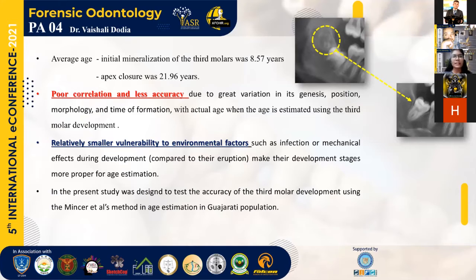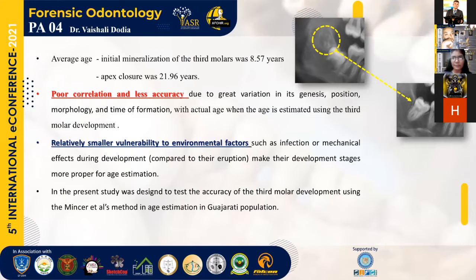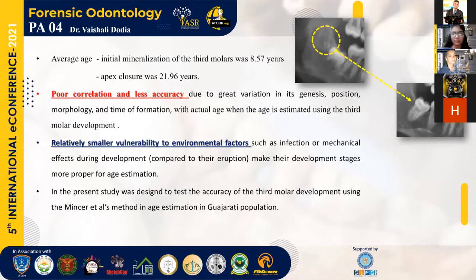For the third molar, the average age for initial mineralization is 8.57 years and apex closure occurs at 21.96 years. Using the third molar developmental stage for age estimation gives poor correlation and less accuracy. It shows greater variation in its genesis, position, morphology, and time of formation, but also relatively smaller vulnerability to environmental factors during development, making it more suitable for age estimation.